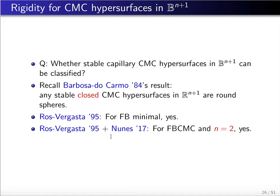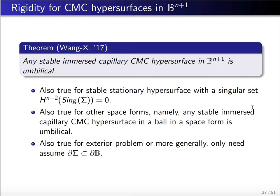Recently, Nunes found a new stability inequality and, combined with the previous argument of Ros and Vergasta, proved the result for free boundary CMC surfaces in the two-dimensional case. Finally, we completed this question: we proved that for any dimension, any stable immersed capillary CMC hypersurface must be umbilical.